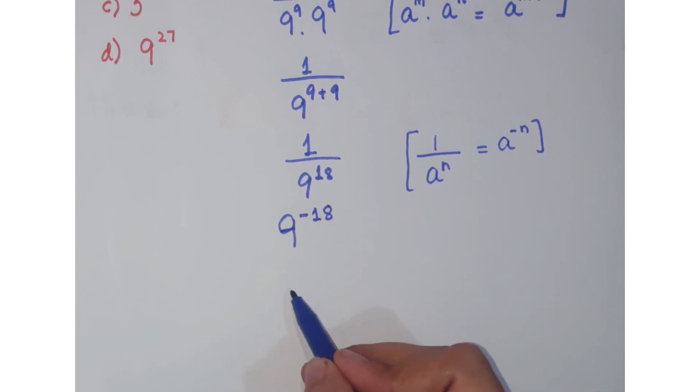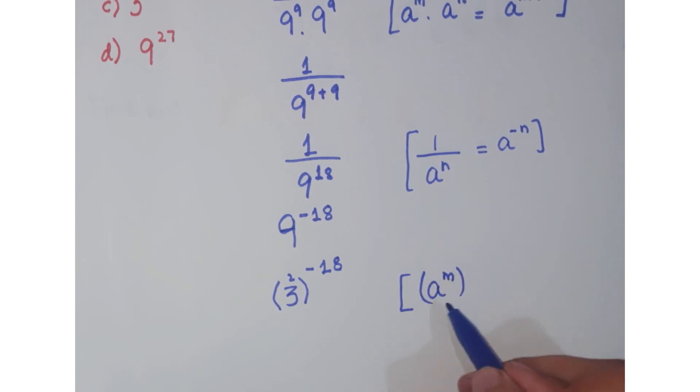As you know, 9 is the square of 3. So write it as 3 to the power 2 raised to the power minus 18. Now according to another rule, a to the power m in brackets to the power n can be written as a to the power m times n.